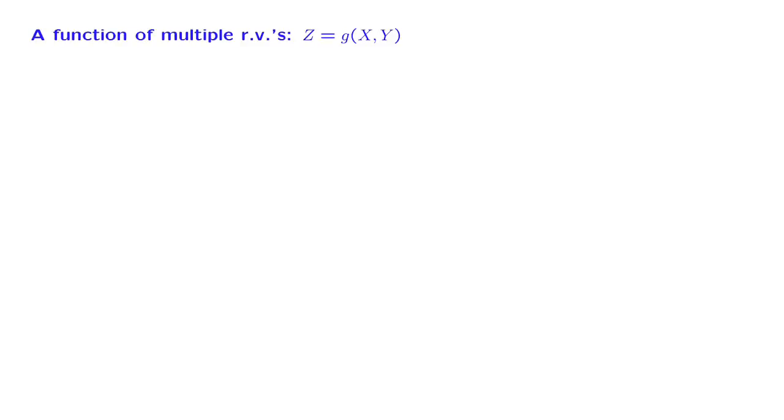In all of the examples that we have seen so far, we have calculated the distribution of a random variable y, which is defined as a function of another random variable x. What about the case where we define a random variable z as a function of multiple random variables? For example, as here, as a function of two random variables. How can we find the distribution of z?